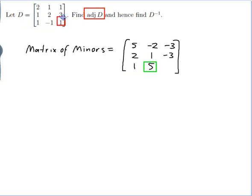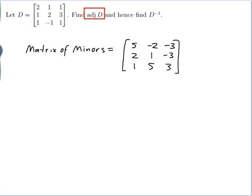Finally I move on to the last entry of D and the minor will go in the matching entry of the matrix of minors. I cross out the row and column that I am in and calculate the determinant of what is left, which is 2 times 2 minus 1 times 1, which is 3. So I have finally found the matrix of minors.